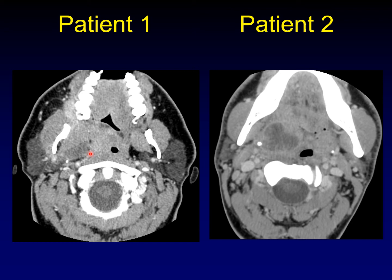That was true on the MRI as well as on this CT. So what arises within the parapharyngeal fat? Not a lot does that. You can get pleomorphic adenomas that arise within the parapharyngeal fat. You can get venous lymphatic malformations because those can appear anywhere in the body. And you can get second branchial cleft cysts. This is the second most common location of a second branchial cleft cyst — here within the parapharyngeal fat.